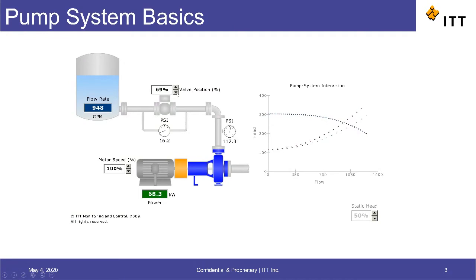So as the valve is closed, it essentially changes the shape of the system curve until it intersects with the pump curve close to our desired flow rate of 700 gallons per minute.